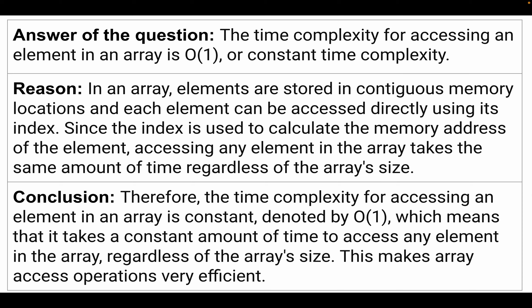So, our question was: what is the time complexity for accessing an element in an array? The answer is that the time complexity for accessing an element in an array is O(1), or constant time complexity. The reason is that in an array, elements are stored in contiguous memory locations and each element can be accessed directly using its index. Since the index is used to calculate the memory address of the element, accessing any element in the array takes the same amount of time, regardless of the array size.